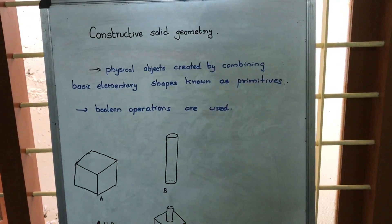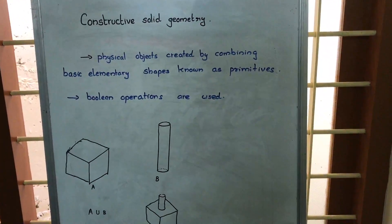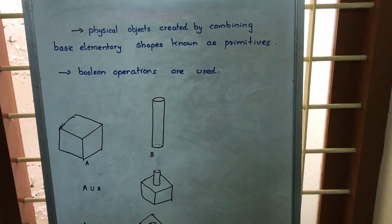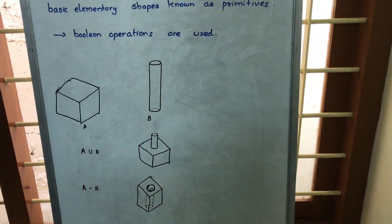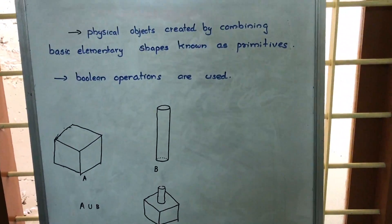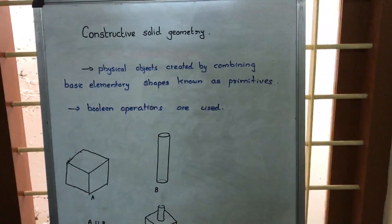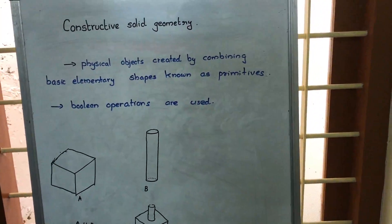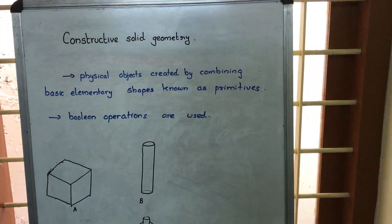Constructive Solid Geometry, or CSG. Here there are some basic objects, basic parts called primitives, and those primitives are combined together by certain Boolean operations, and we are creating certain complex models. That's what we call Constructive Solid Geometry.